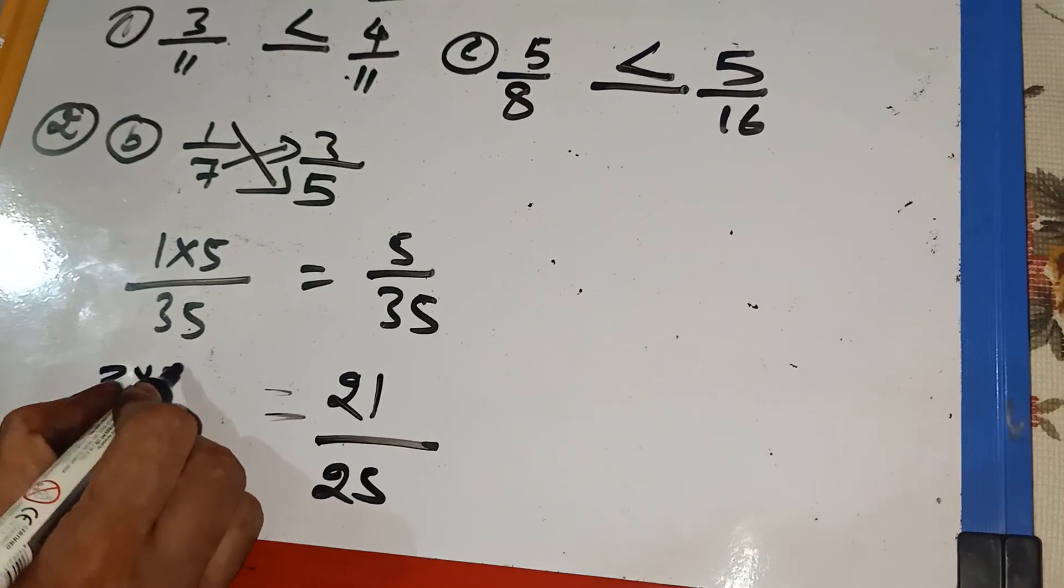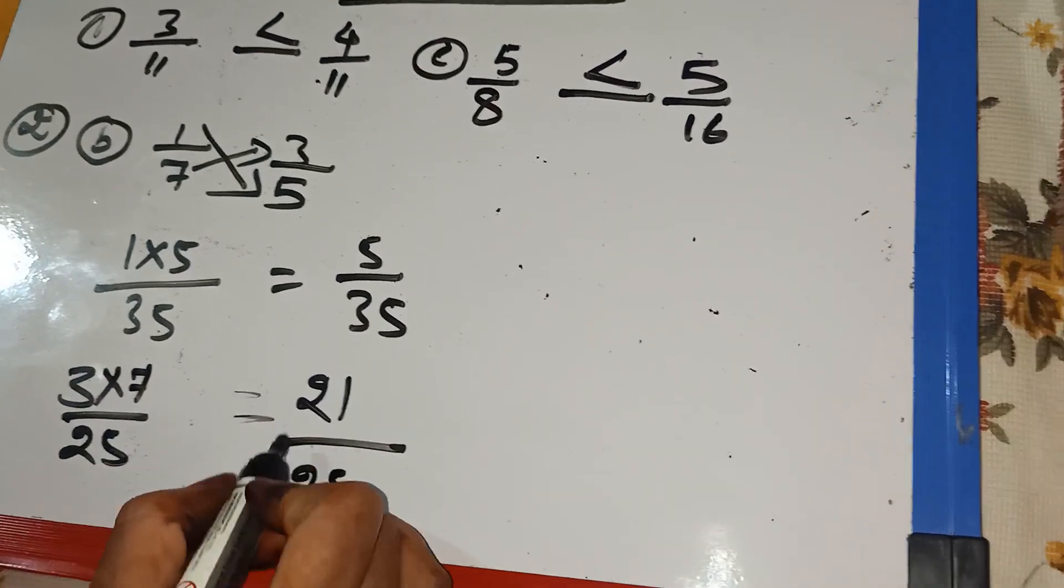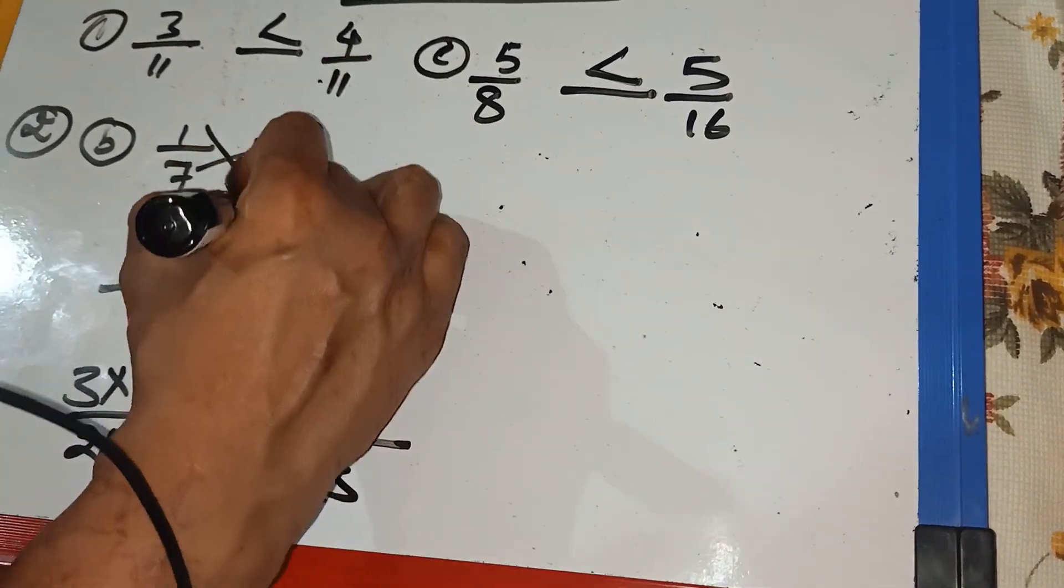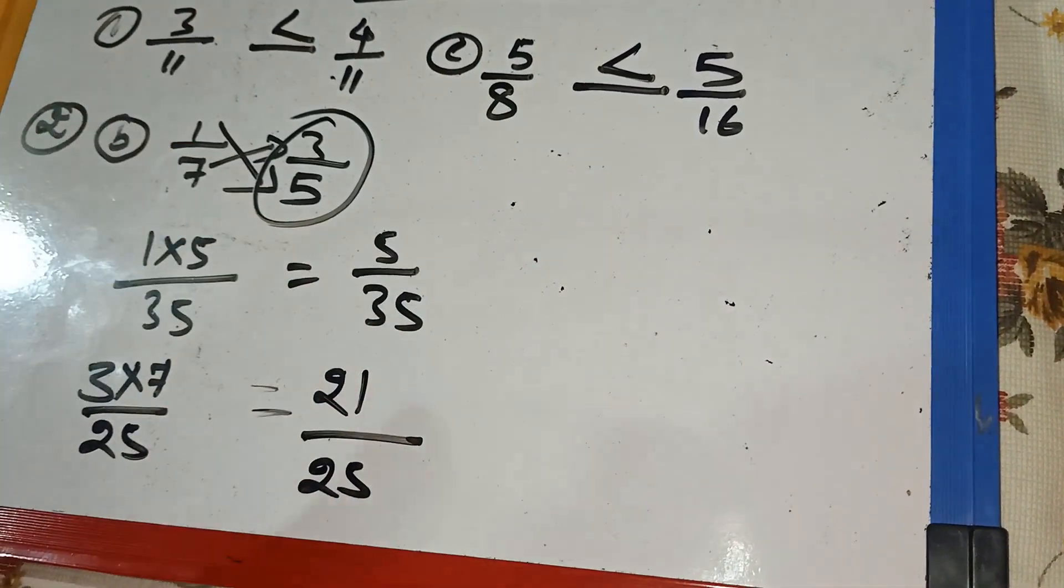And it is 21 by 35. So, you see 21 by 35 is bigger. So, by comparing, we find out 3 by 5 is bigger than 1 by 7.